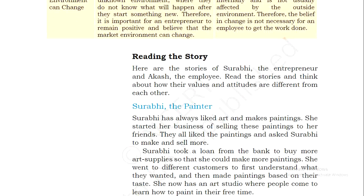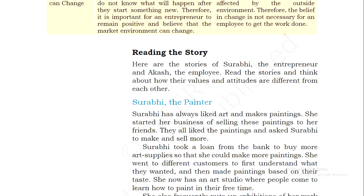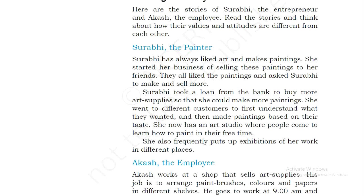Now we will read the story of Surbhi the entrepreneur and Akash the employee. Read the stories and think about how their values and attitudes are different from each other. Surbhi the painter is an entrepreneur — Surbhi has always liked art and making paintings. She started her business of selling these paintings to her friends. They all liked the paintings and asked Surbhi to make and sell more. Surbhi took a loan from the bank to buy more art supplies so that she could make more paintings.